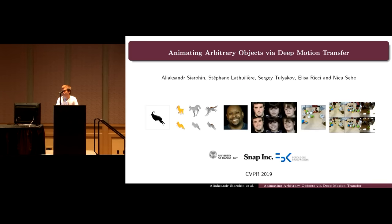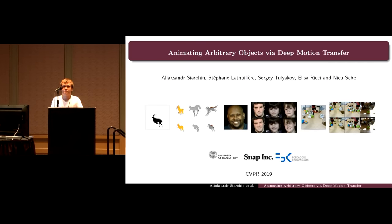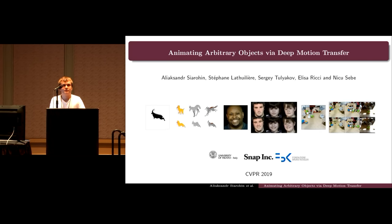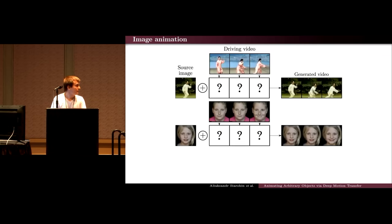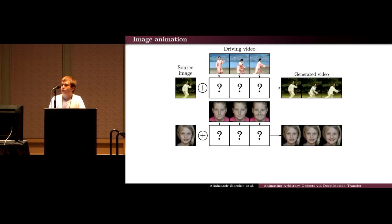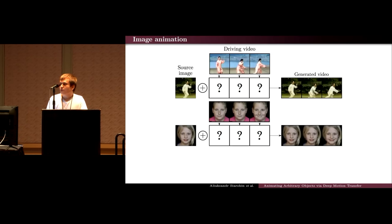My name is Alexander and I will present our joint work on animating arbitrary objects via deep motion transfer. Given only a single source image and a driving video, our method can animate different objects without requiring any prior knowledge about the object. We extract the motion representation from the driving video and combine it with the source image to obtain a generated video. Previous methods rely on pre-trained keypoint detectors, which are available for well-explored domains such as human bodies or faces, but not for arbitrary objects like cartoon animals or robot arms.